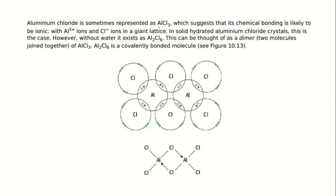Aluminium chloride is sometimes represented as AlCl3, which suggests that its chemical bonding is likely to be ionic, with aluminium 3+ ions and chloride ions in giant lattice.